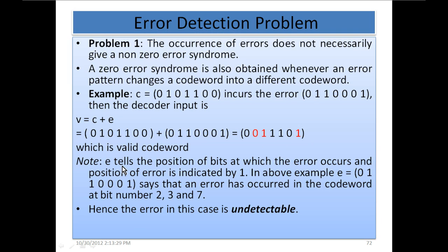Note: E tells the position of bits at which the error occurs, and the position of error is indicated by 1. This E is simply indicating the position of the error — in which bit the error has occurred. In the above example, E is equal to 0, 1, 1, 0, 0, 0, 1, saying that errors occurred at bit numbers 2, 3, and 7.